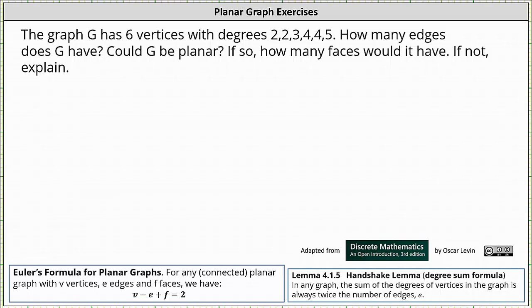The graph G has six vertices with degrees 2, 2, 3, 4, 4, 5. How many edges does G have? Could G be planar? If so, how many faces would it have? If not, explain.